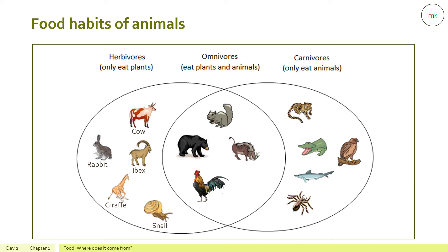Examples of carnivores include leopard, crocodile, eagle, shark, and spider. Carnivores like snakes swallow their prey whole. Lions and leopards have long sharp canines to tear flesh. Eagles have long pointed beaks to tear flesh.